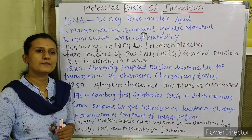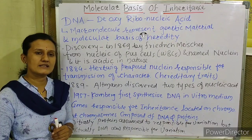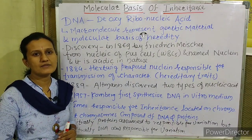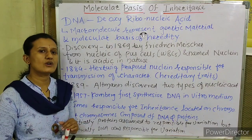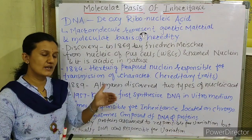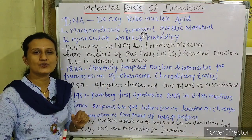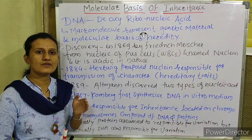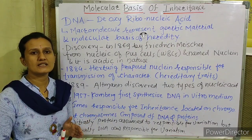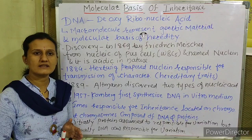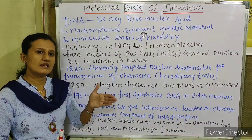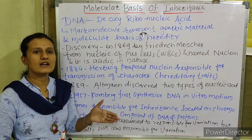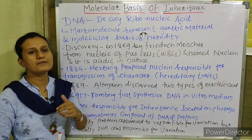We are all diploid organisms. In the case of diploid eukaryotic organisms, we have 23 pairs — 46 chromosomes — present in our nucleus. That means we are diploid organisms with a developed nucleus, meaning we are eukaryotic as well as diploid.